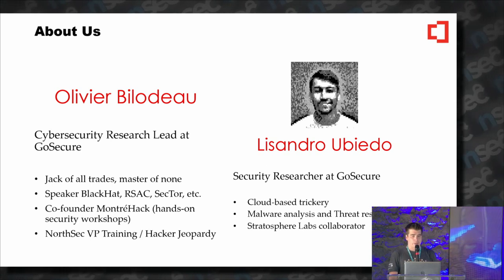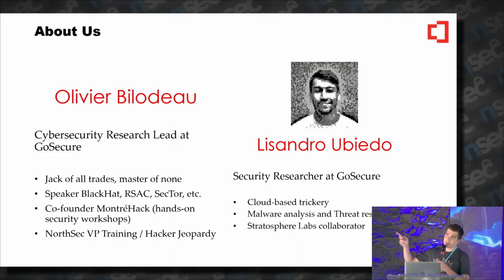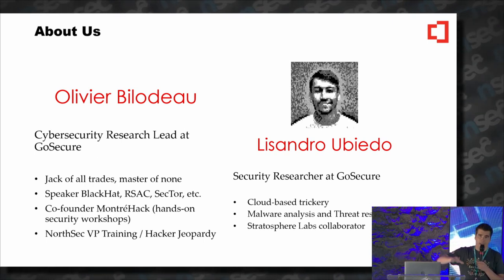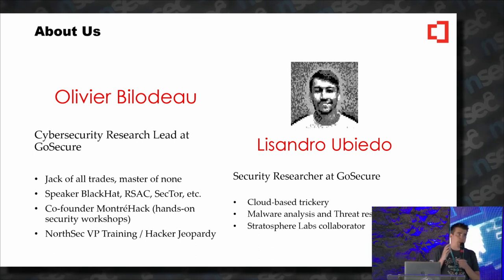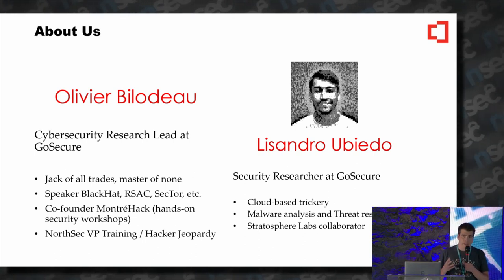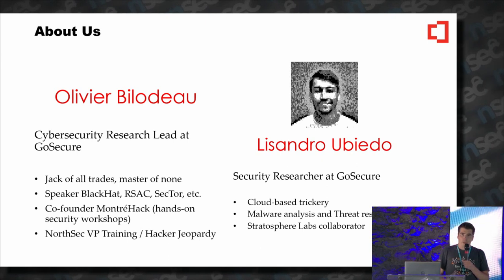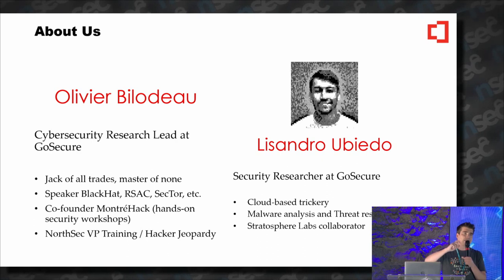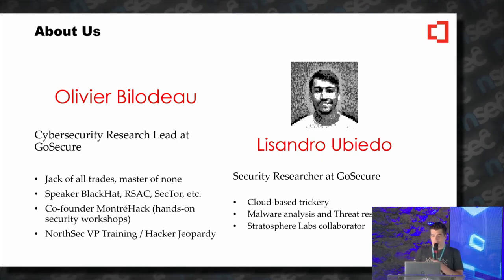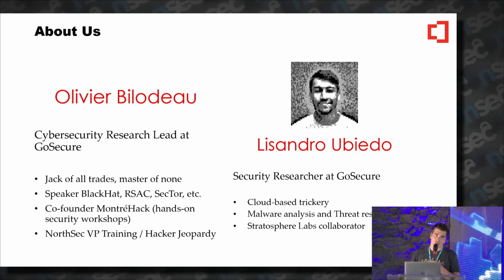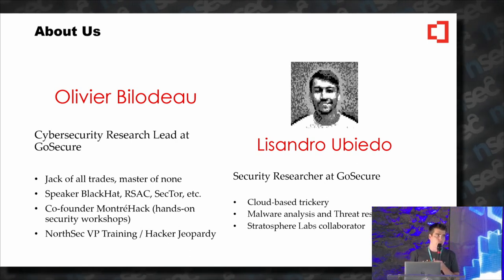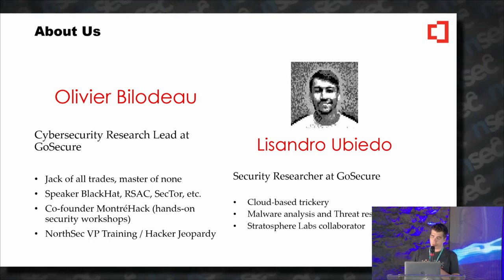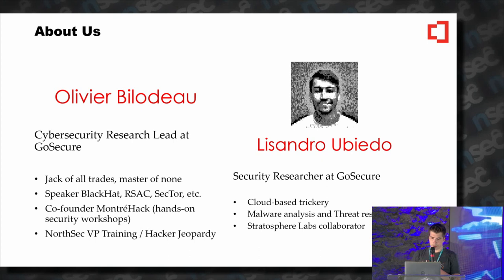So about us — no time for that. I should say: I was supposed to present with Lissandro, but his visa didn't get approved in time. So apparently when Immigration Canada says it's going to take 23 days, they don't mean 23 days for real — it's like 23 days of Jupiter. But one day you'll see Lissandro; he'll have a visa. They are good for five years, so once he has it, he'll present here at either this conference or at Gosec.